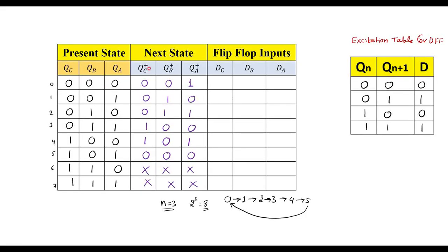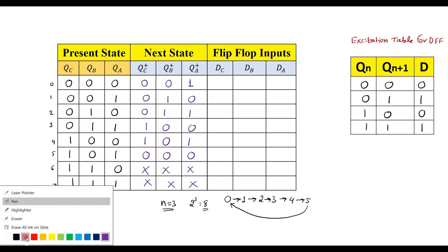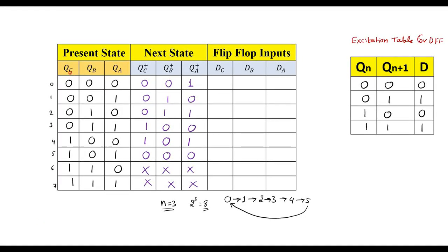Now we have to write the flip-flop inputs using the excitation table. Considering QC and QC+ to write DC: when QC=0, QC+=0, DC=0; repeated for the first three rows giving DC=0. When QC=0, QC+=1, DC=1. When QC=1, QC+=1, DC=1. When QC=1, QC+=0, DC=0. The remaining two rows are don't care (X) since states 6 and 7 are undefined.